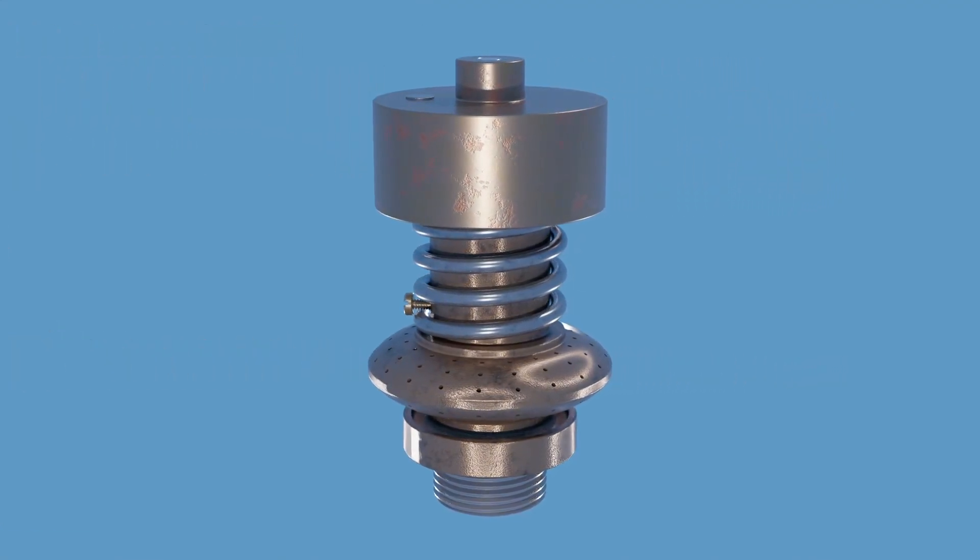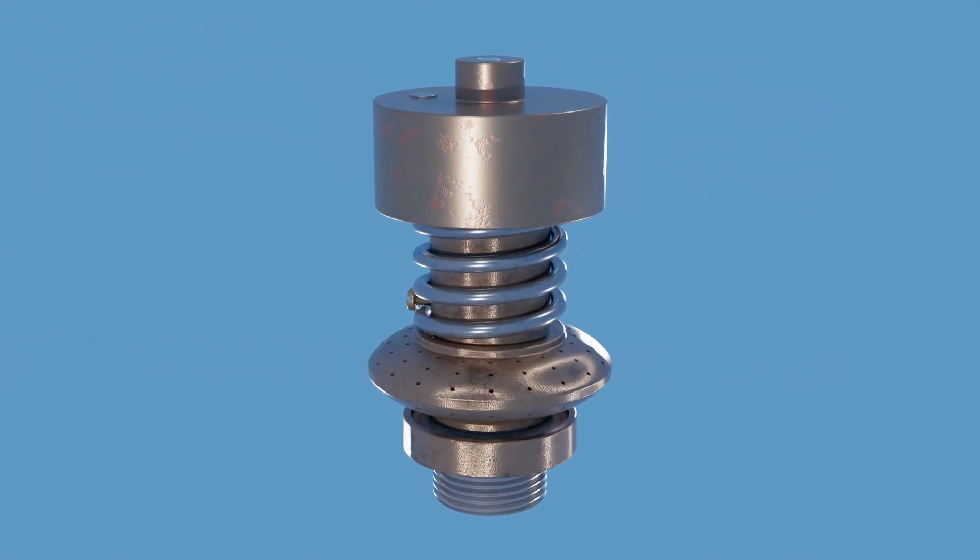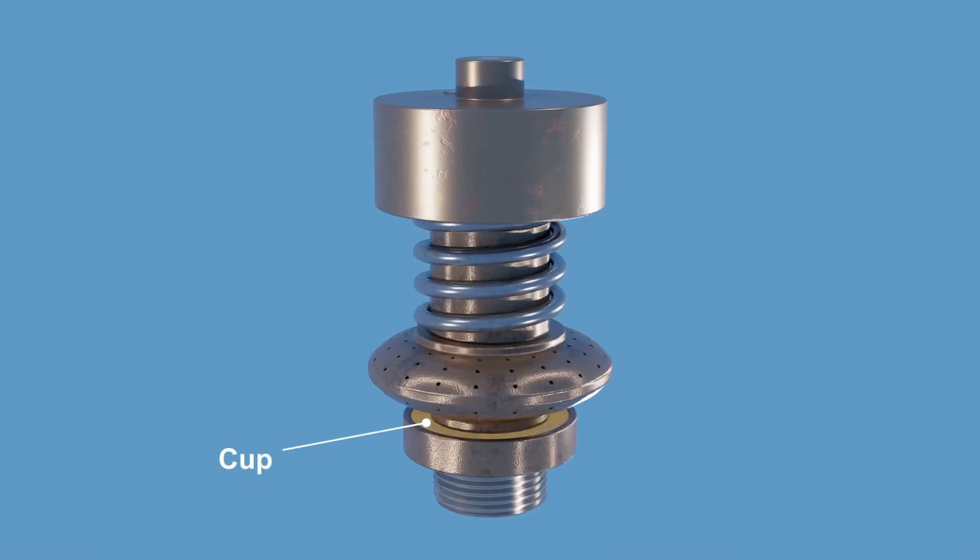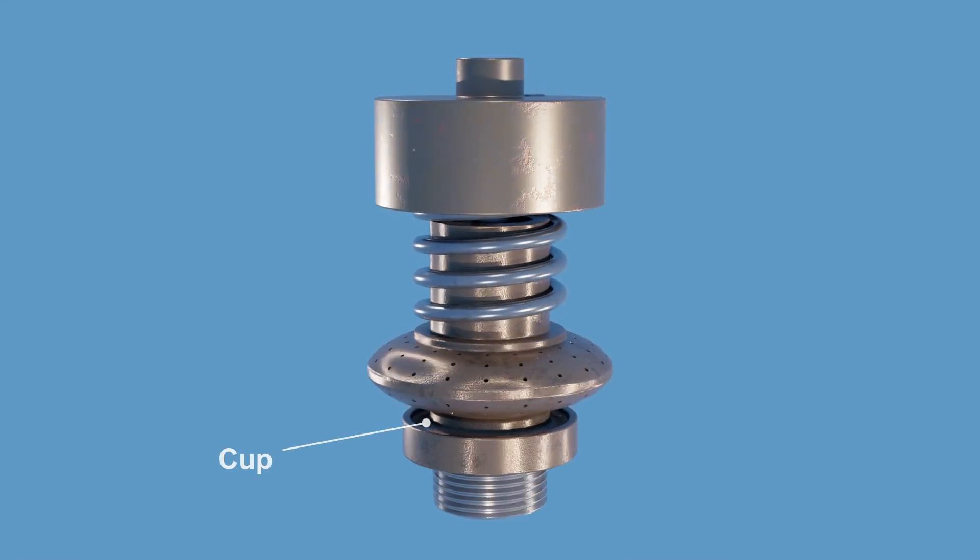Sprinklers may drip due to valve leaks. Each sprinkler is equipped with a cup underneath to catch these drips, which can be wiped off or left to evaporate.